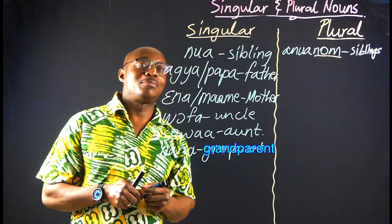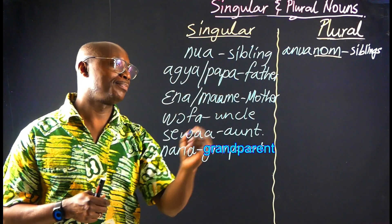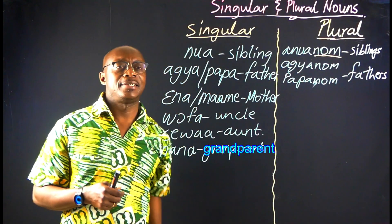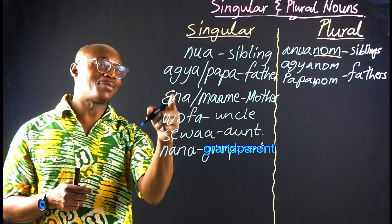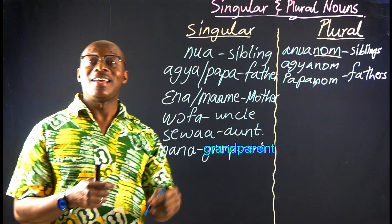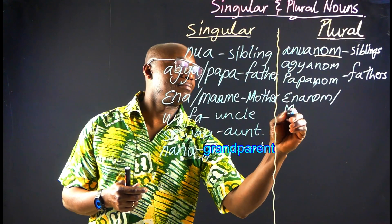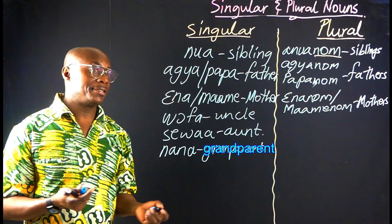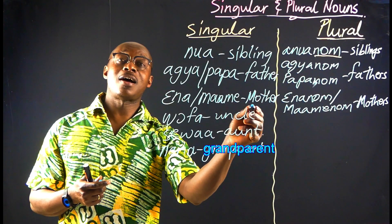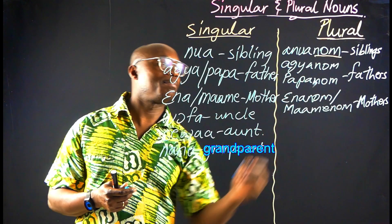So let's go. Eja — in plural we have Ejanum. Papa — in plural we have Papanum. Anum. Enna, that is mother, or Mami — it also means mother. In plural form, we have Enanum or Mamidum. So Enna or Mami is singular for mother; in plural form, we have Enanum or Mamidum.